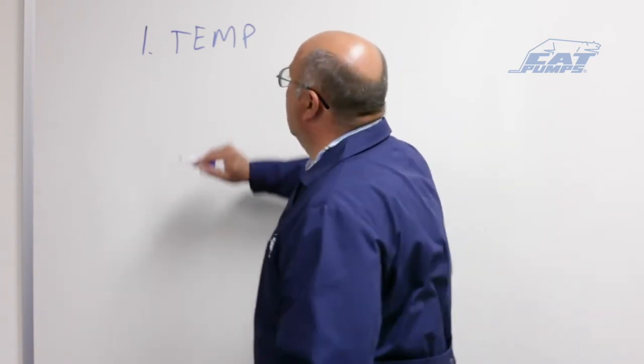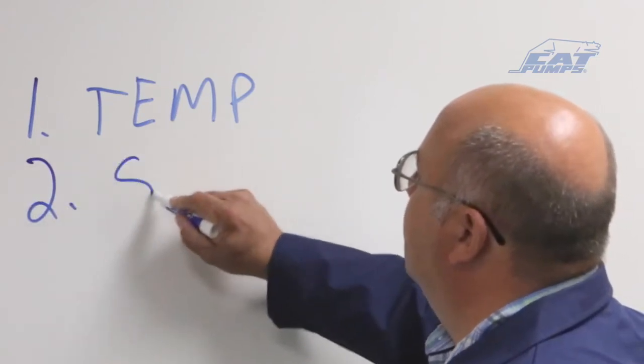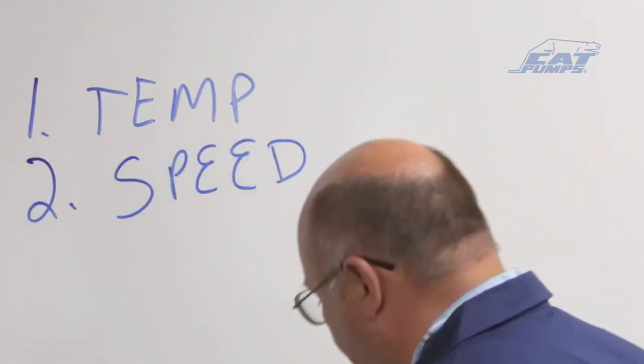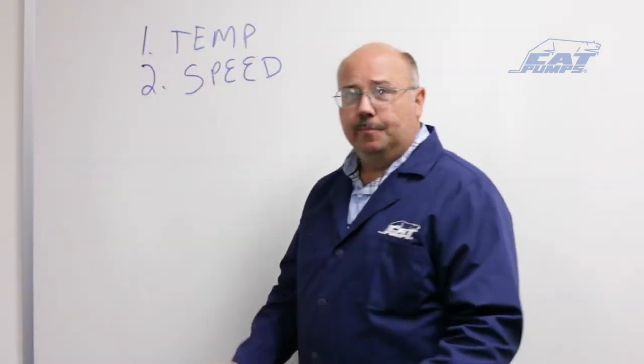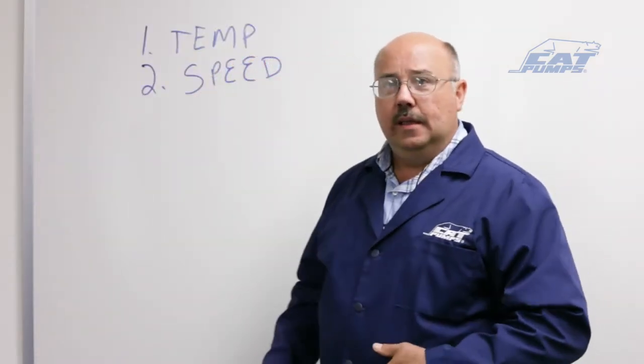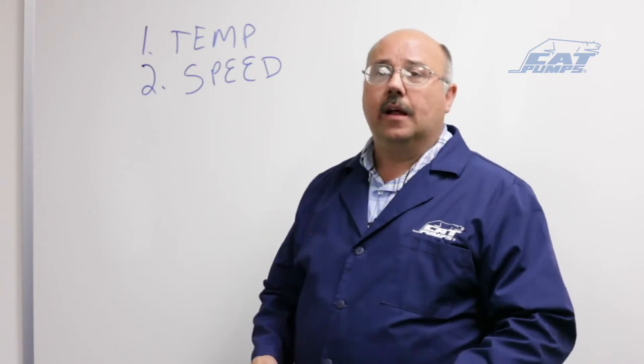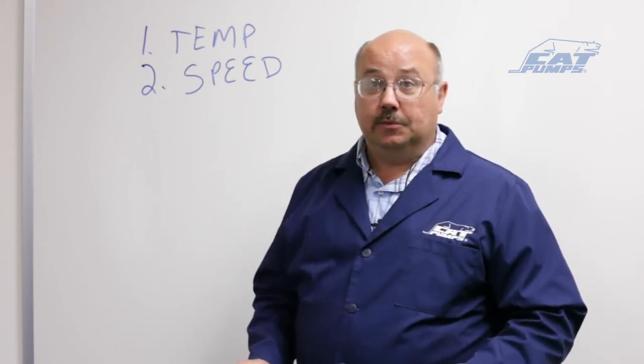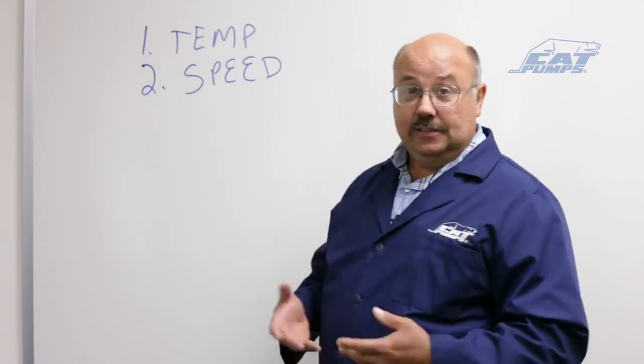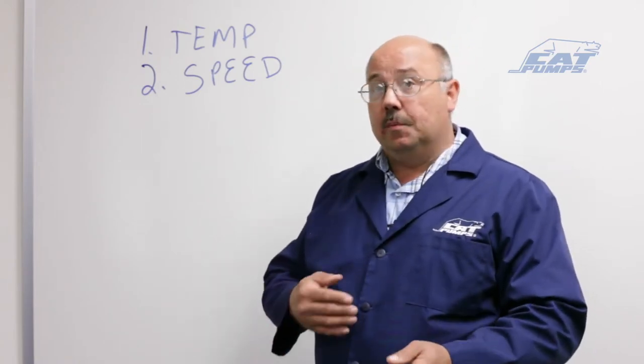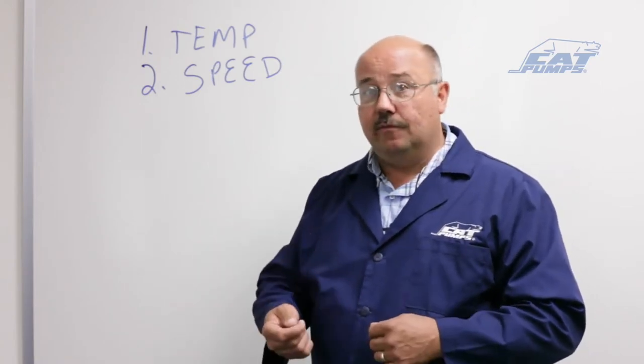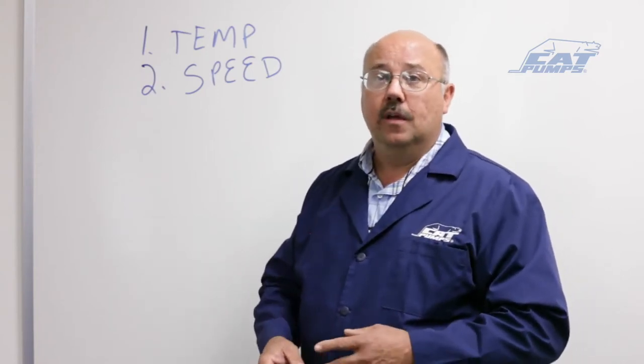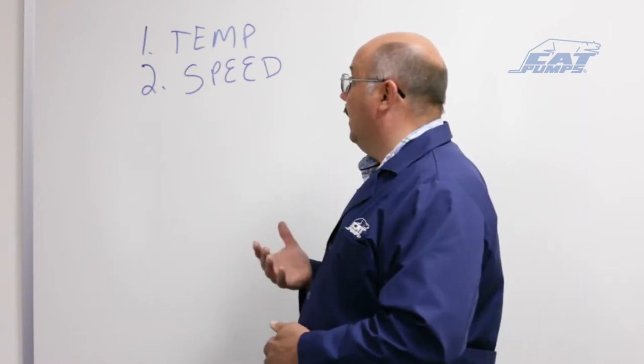The second thing we want to talk about is speed. The speed of the pump will determine how easy we can cause it to cavitate or not. All pumps have a rated maximum speed. If we try to exceed that, then we're going to be moving the plunger faster than it's rated for. And the areas to try to get the water into the valves and the manifold will be exceeded and we could cavitate.